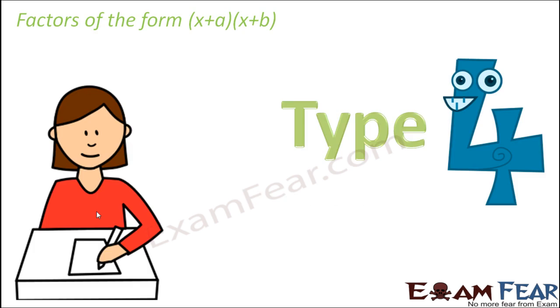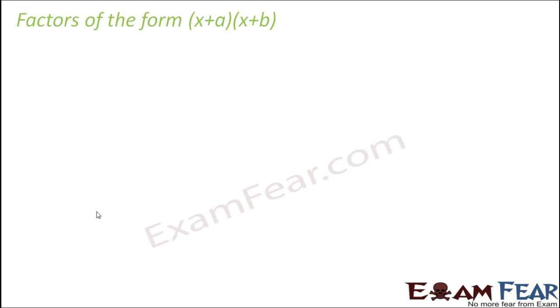Now let's move on to type 4, that is factors of the form (x+a)(x+b). So what is this type basically? Now sometimes in certain cases, you come across an expression with 3 terms where 2 terms are not perfect squares. So even though one term is a perfect square, the other term might not be a perfect square. So this form looks very much similar to (a+b) whole square form, but it is not exactly that form.